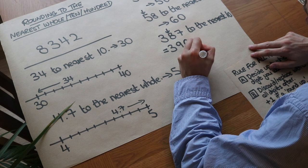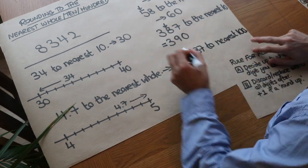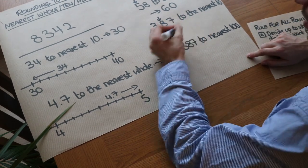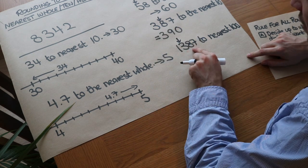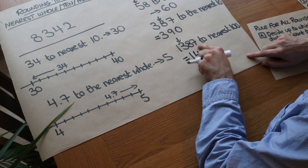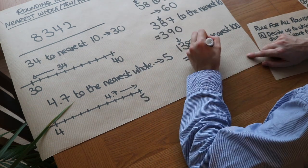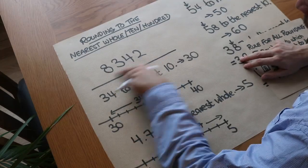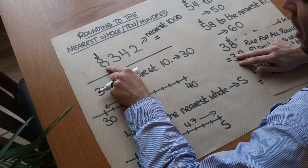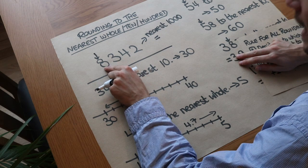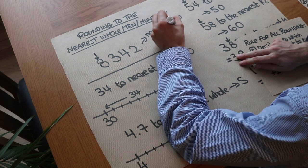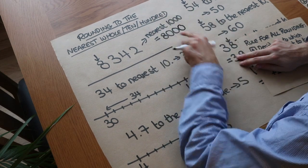What about 1387 to the nearest hundred? We keep everything up to the hundreds digit - that three - then check the next digit. Eight is greater than or equal to five, so the three goes up to four, and everything else is replaced with zero: zero tens and zero units, giving 1400. And for our party number 8,342 to the nearest thousand: we keep up to the thousands digit - eight - check the next digit, three, which is not greater than or equal to five, so eight stays as eight. All other digits are replaced with zeros: 8,000.